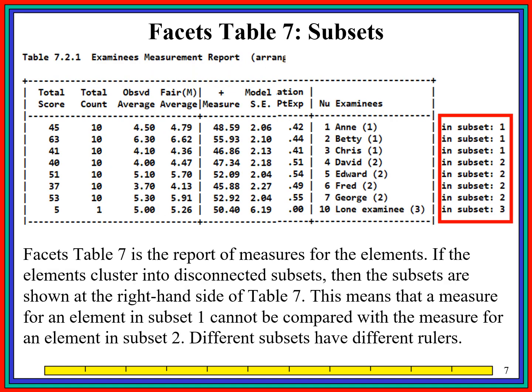This is what subsetting looks like in the FACETS output. Table 7 is the table of measures, and on the right-hand side it lists which subset each examinee is in. The three examinees in subset 1 — Anne, Betty, and Chris — can be compared with each other, but they can't be compared to the examinees in subset 2: David, Edward, and Fred. We know Anne is a lower performer than Betty, and that David is a lower performer than Edward, but we don't know how Anne relates to David. There are numbers, but those numbers are in different frames of reference and can't be compared directly.